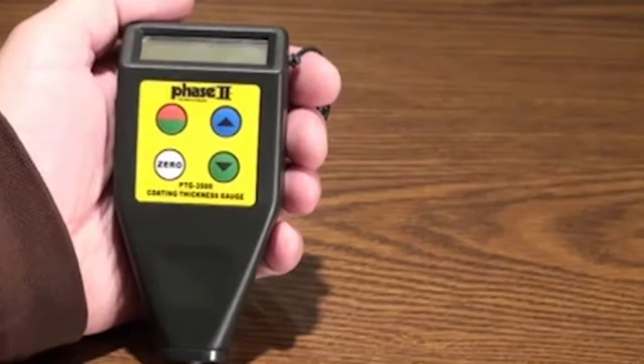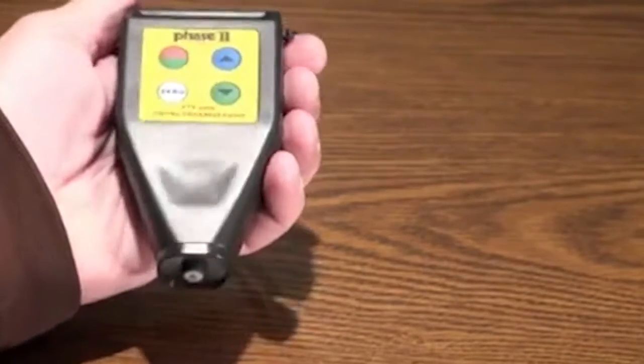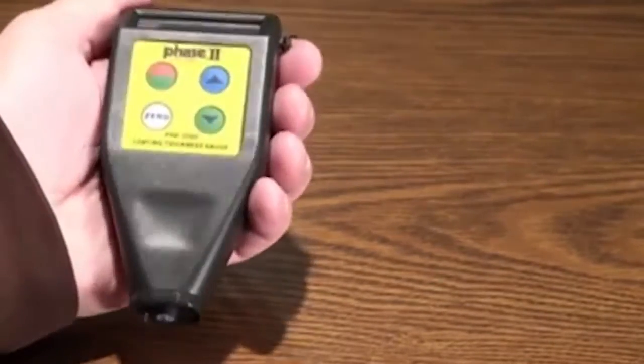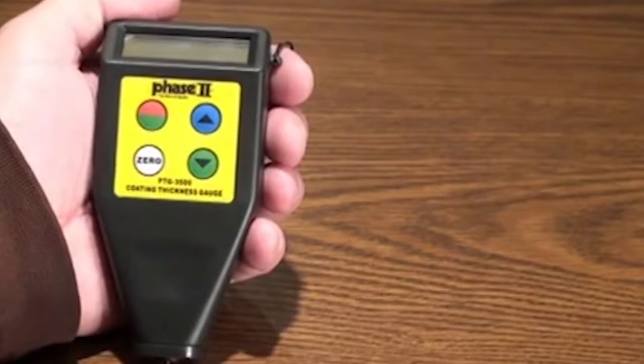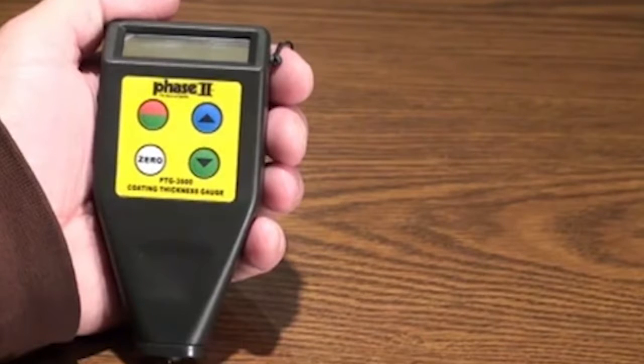Phase II offers two models in this series of coating thickness gauges. The PTG-3500 comes with a built-in probe, and the PTG-3550 with an external probe, which may help in tight testing spots. Both models work exactly the same way and are even priced the same. For demonstration purposes, we will use the PTG-3500 version.